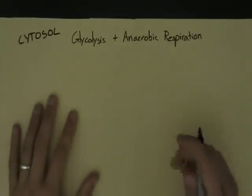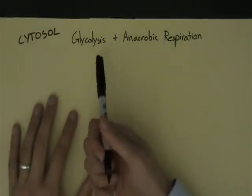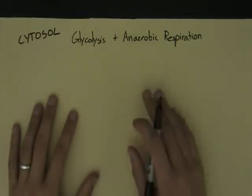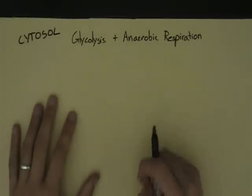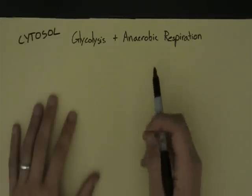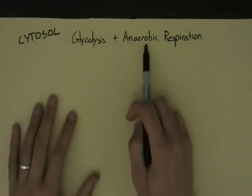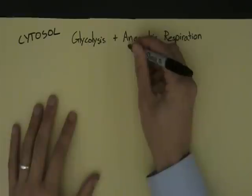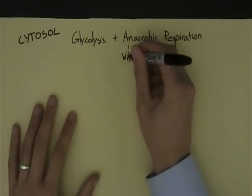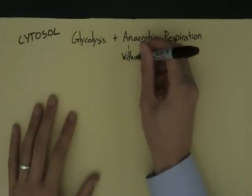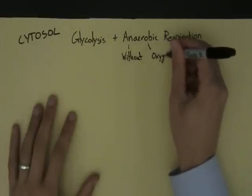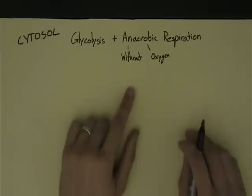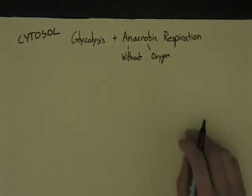It's really important that you understand it takes place in the cytosol, not the mitochondria. Glycolysis is the first step in both aerobic and anaerobic respiration, but this video will not explain the next two stages. They will come in later videos. Anaerobic respiration, remember, means without oxygen. Anaerobic means without oxygen.